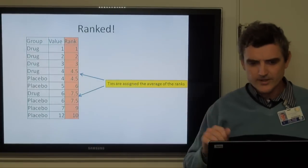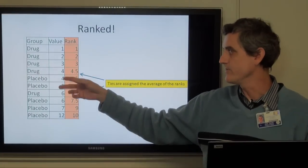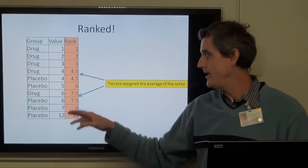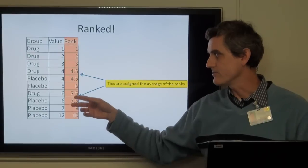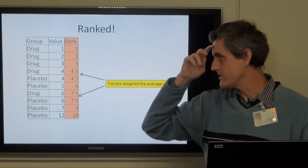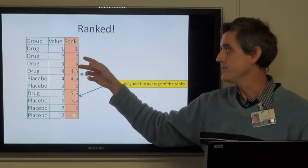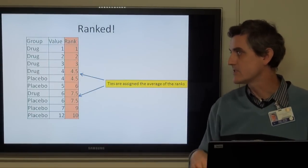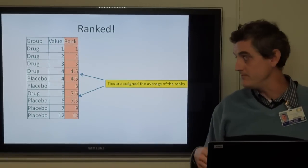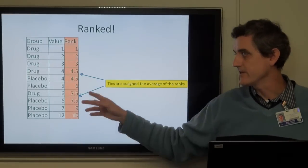We put the data in order, making sure to keep track of which group each individual is in while we rank them. Occasionally you'll get ties — a kid on the drug and a kid on the placebo who each had four episodes, or two kids who each had six episodes. When we rank them, the person with one episode gets rank one, the person with two gets rank two, but the two tied at four get the average of ranks four and five, which is 4.5. So they each get the same rank.